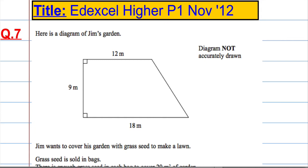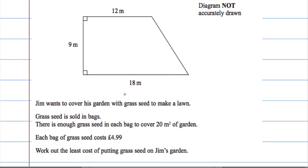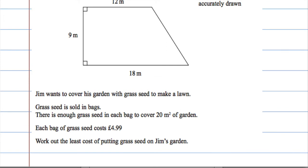Right, so question seven. Here is a diagram of Jim's garden, and Jim's garden is a fantastic trapezium-shaped garden. He wants to cover his garden with grass seed to make a lawn. Grass seed is sold in bags. There is enough grass seed in each bag to cover 20 meters squared, so each bag will cover 20 meters squared, and each bag costs £4.99. Work out the cost of putting grass on the garden.